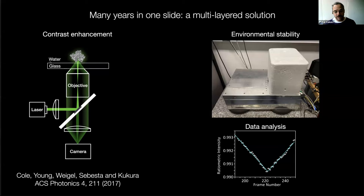As often happens, once you make your measurement more sensitive, you discover lots of noise sources you didn't know existed. So we had to work quite hard to improve the environmental stability of the instrument. If the glass coverslip moves by more than an angstrom in a hundred milliseconds, your measurement is ruined. Everything has to be really mechanically stable and insensitive to environmental perturbation.